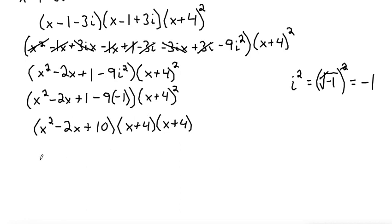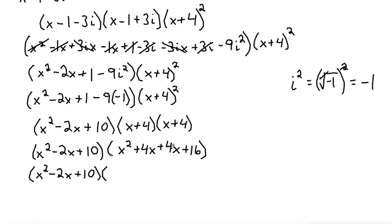From here, now let's multiply x plus 4 times x plus 4. I'll bring down the x squared minus 2x plus 10. So then x times x is x squared plus 4x and then plus another 4x plus 16. Combining like terms, 4x and 4x is 8x. So x squared plus 8x plus 16.